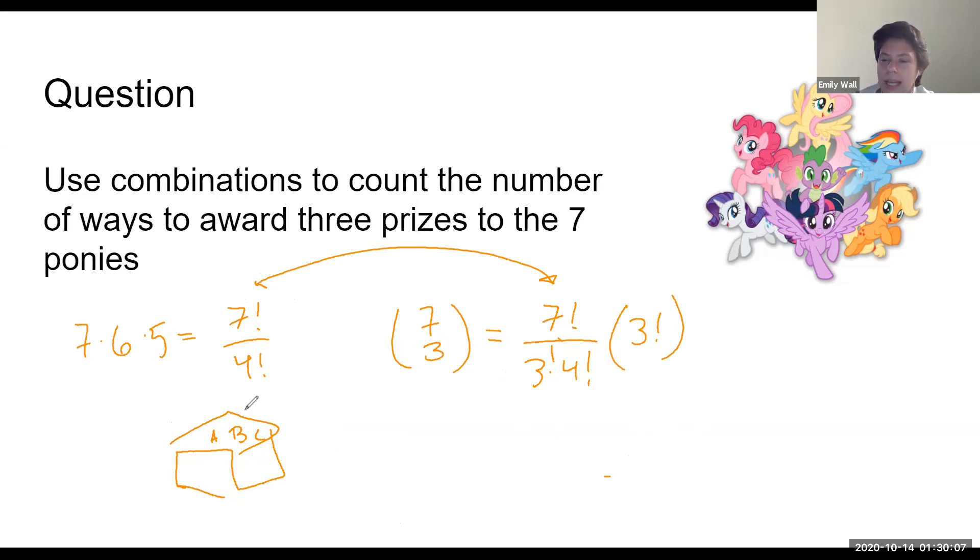But do we just want to count this box once for a permutation where we care about order? Now there are many times we want to count this. Let's think about them. We care about A B C versus A C B, so at least two times. We also care about A B C versus B C A, and you might see where this is going.